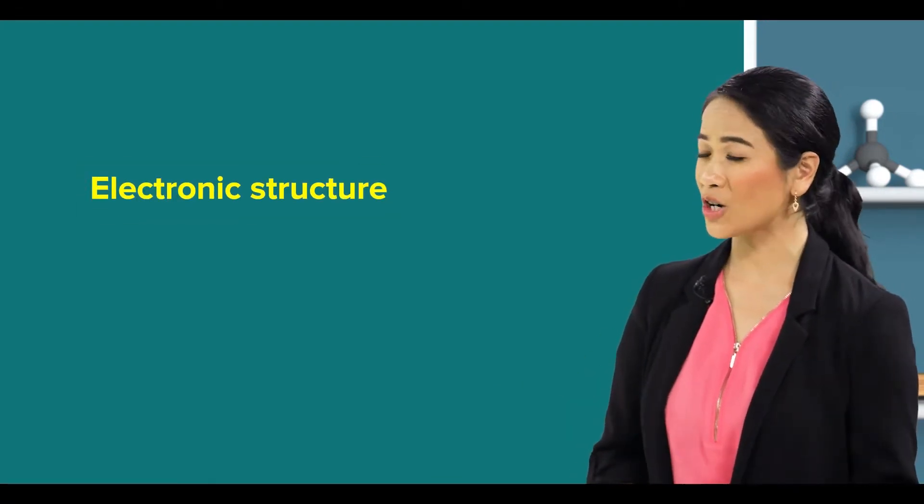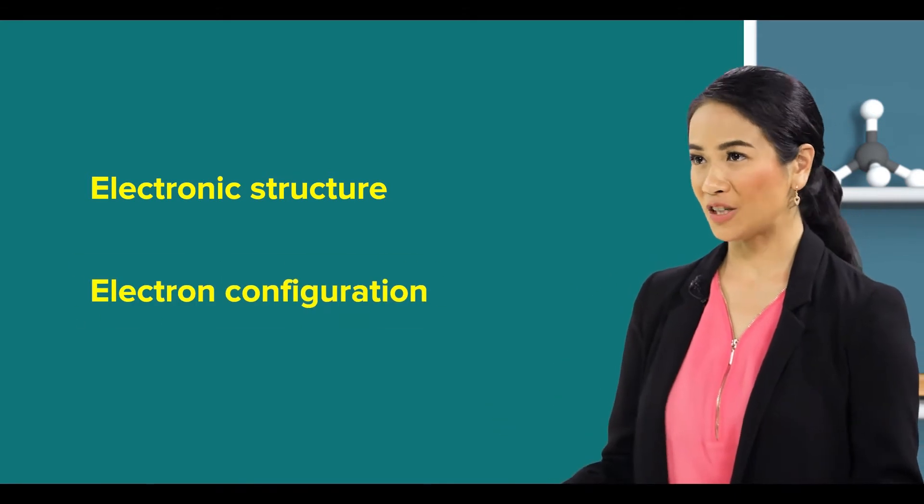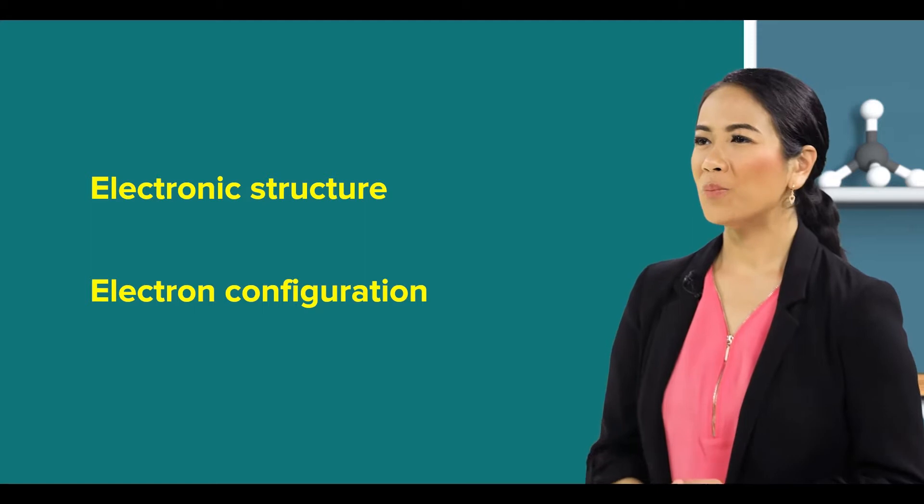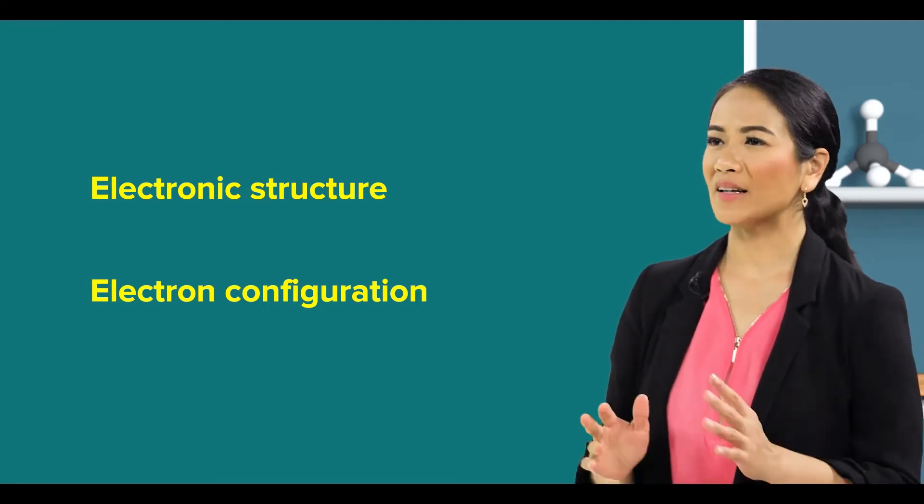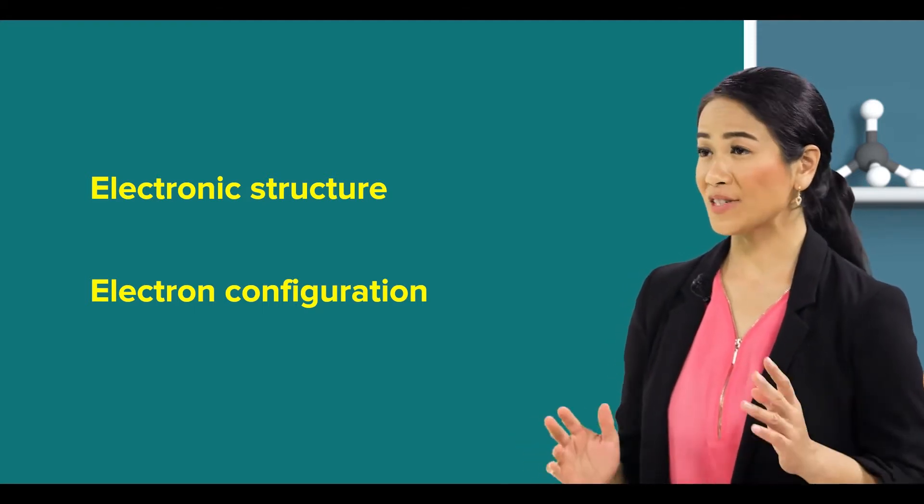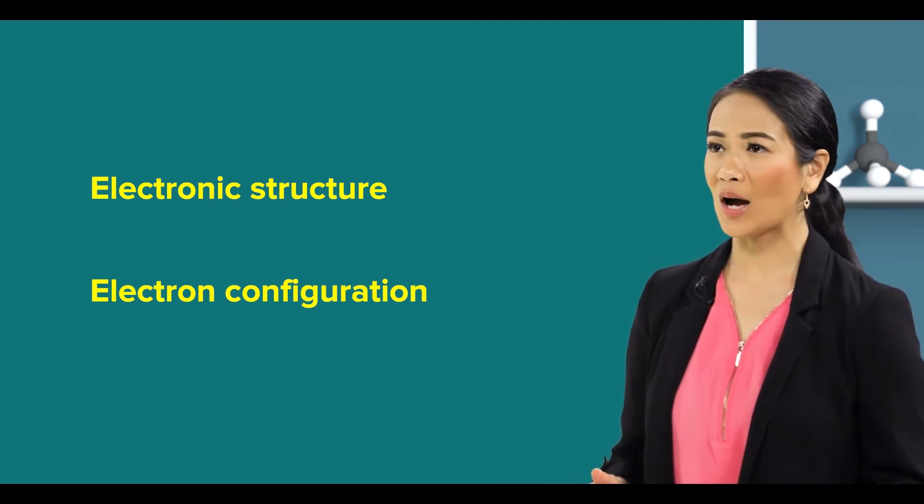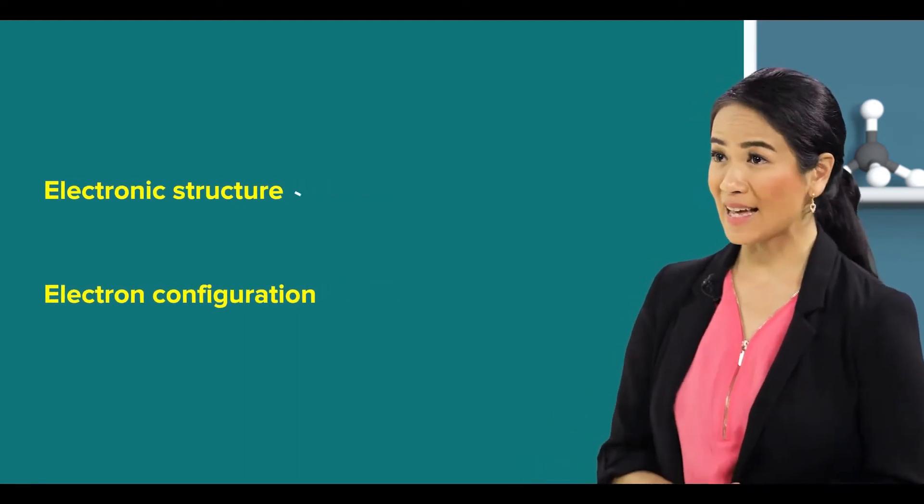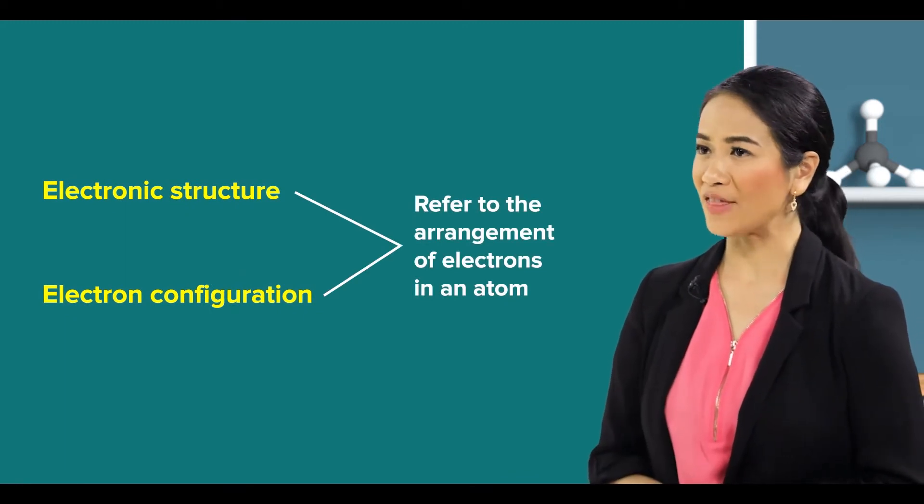First, let's talk about the difference between electronic structure and electron configuration. Yes, please! Actually, both electronic structure and electron configuration are simply notations used to describe the arrangement of electrons in an atom. So, in that sense, they refer to the same thing.